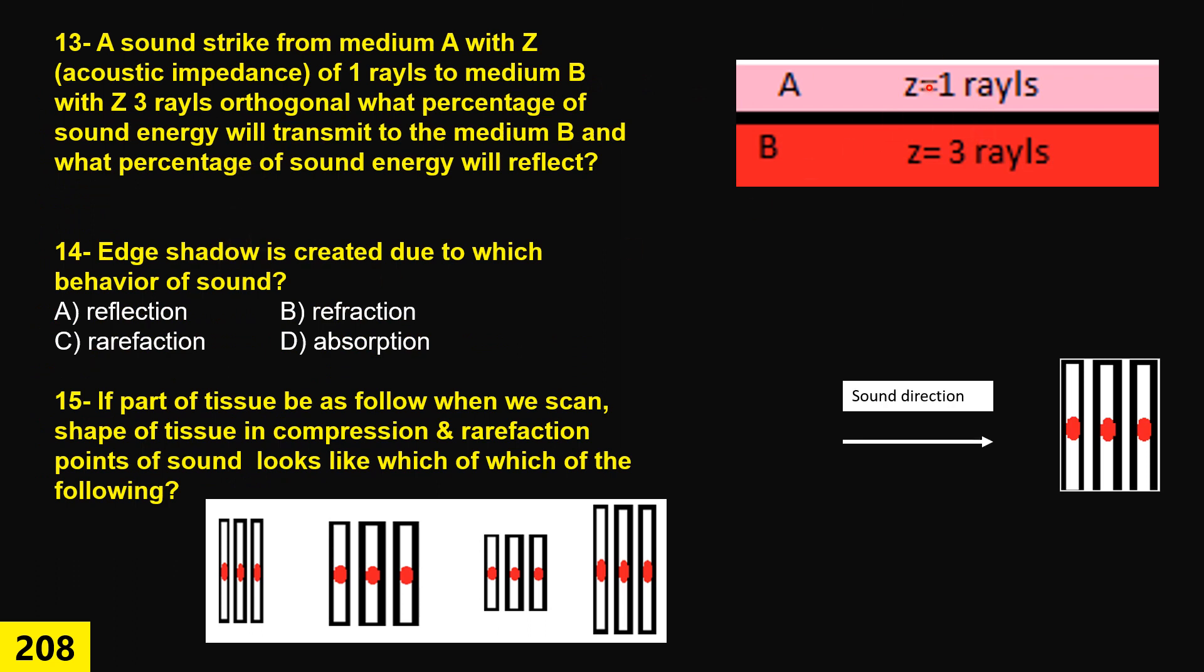Question 13. We have two media here, A and B. Imagine, for example, septum and blood in the left ventricle. We have two and the sound beam goes from A to B orthogonally. First of all, you have to know what orthogonal means. Second, what percentage of sound passed through from A to B and what percentage reflected in this situation? Medium A has Z equals 1 rayls, and medium B with Z equals 3 rayls.